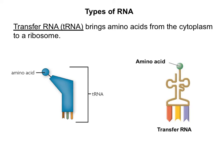Another type of RNA is called transfer RNA, or tRNA for short. Transfer RNA's job is to bring in amino acids from the cytoplasm to a ribosome. Remember, amino acids are the building blocks of protein. They are linked by peptide bonds, and once we have a big chain of amino acids linked together, that chain is going to fold up and make a functional protein, like your muscle fibers, like myosin and keratin, which makes up your hair and your nails.